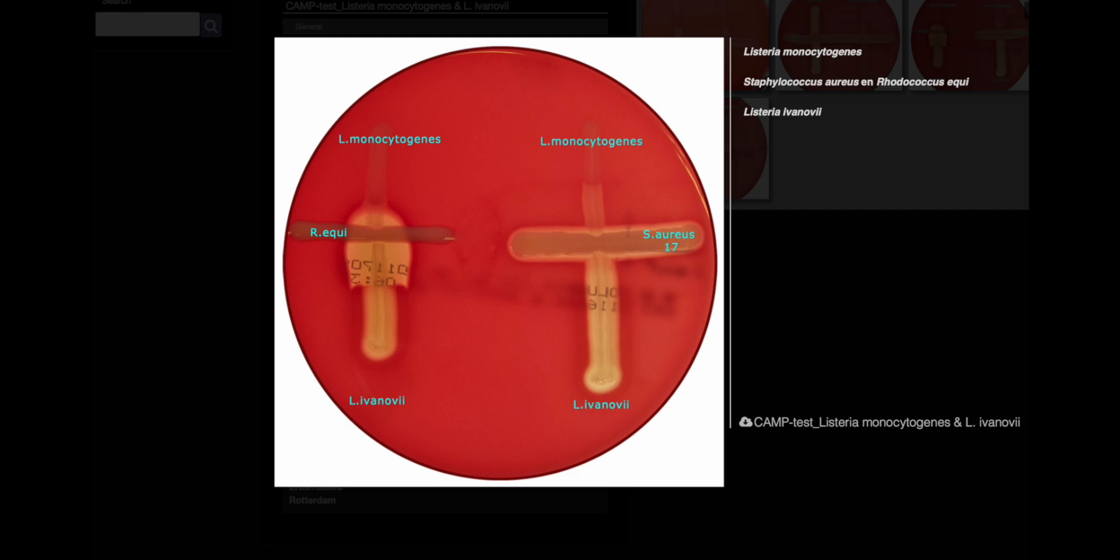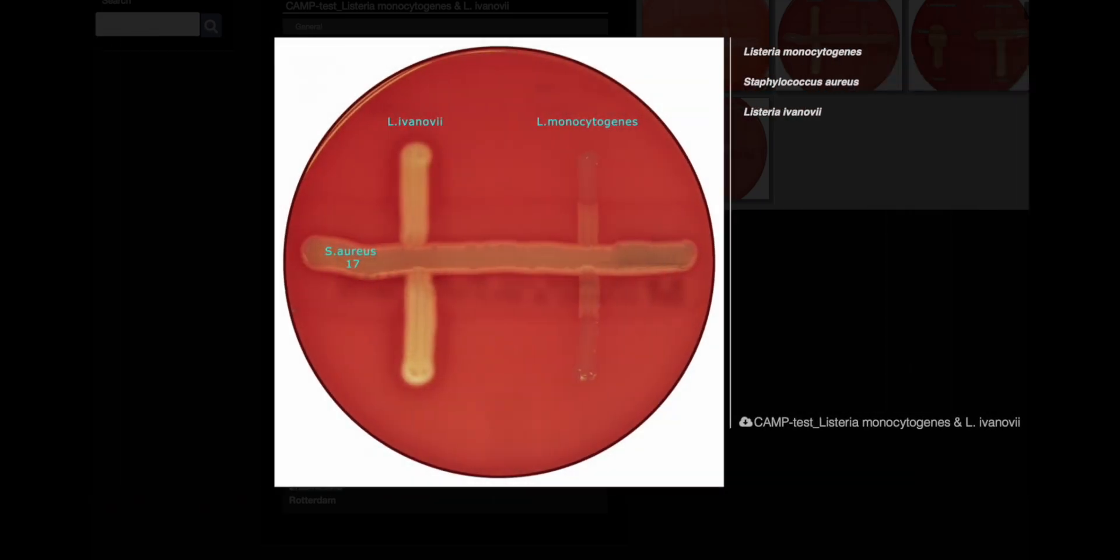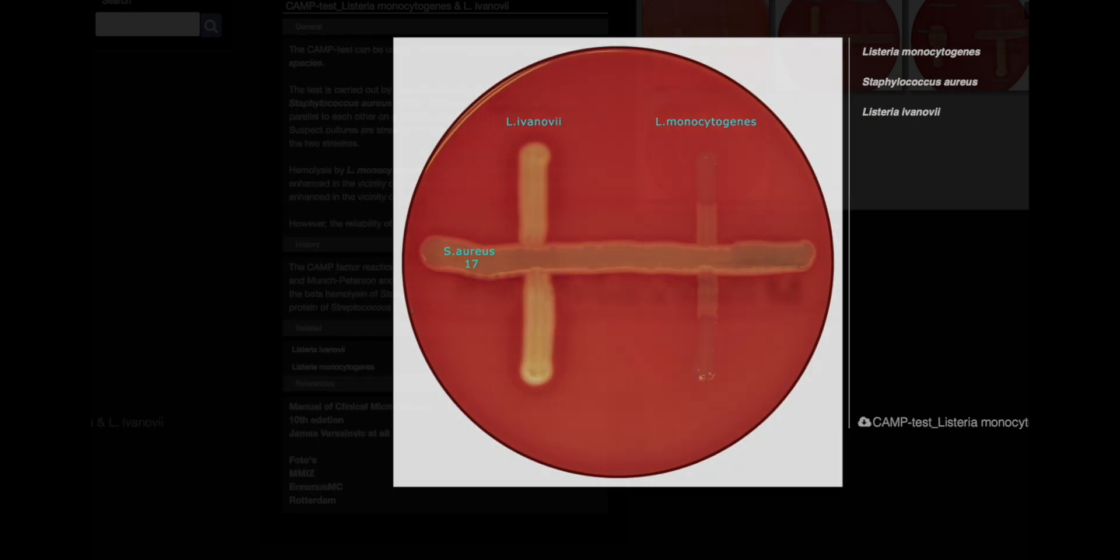Hemolysis patterns their lineage proclaim. Near aureus' embrace, monocytogenes thrives, seeligeri too, where golden hemolysis arrives.